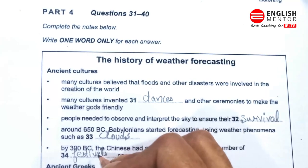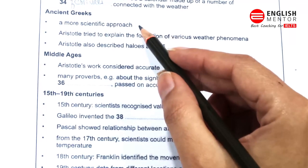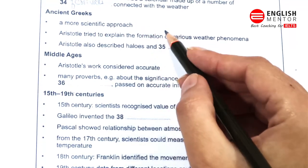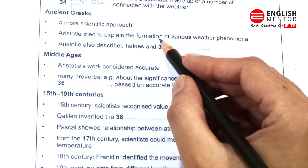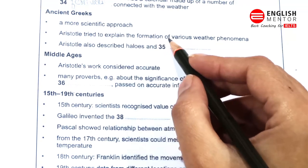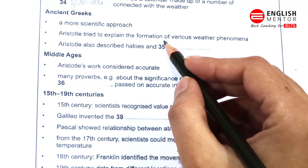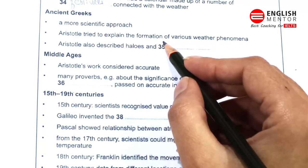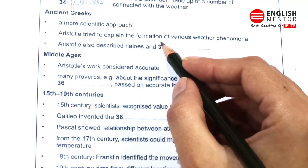The ancient Greeks were the first to develop a more scientific approach to explaining the weather. The work of the philosopher and scientist Aristotle in the fourth century BC is especially noteworthy, as his ideas held sway for nearly two thousand years.